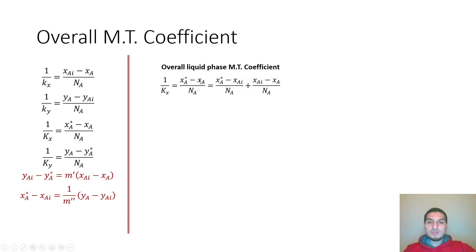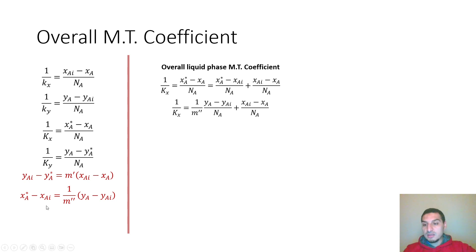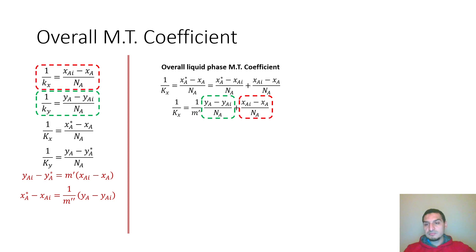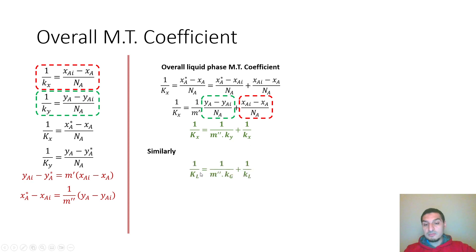We write x* − x_a = (x* − x_interface) + (x_interface − x_a), subtracting and adding the same term. We then rearrange so that (x* − x_interface) is replaced by (1/m'')(y_a − y_interface), keeping the other term as is. Comparing terms, we find that 1/K_x = 1/(m'' · k_y) + 1/k_x. Similarly, we can get the relation between K_y and k_y and k_x, or in terms of K_L and K_G using concentrations and partial pressures.